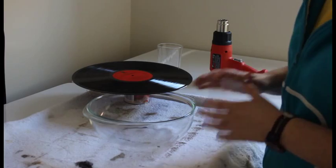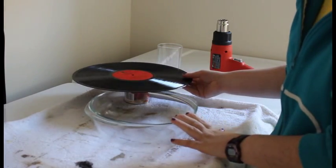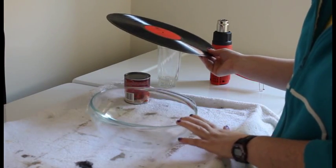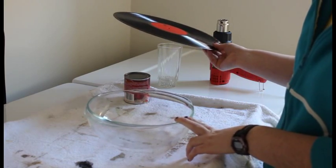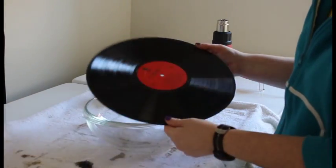To make your vinyl bowl record what you're going to need is a bowl, a glass bowl. I am just using an eight and a half to nine inch bowl, and then you need a vinyl record.